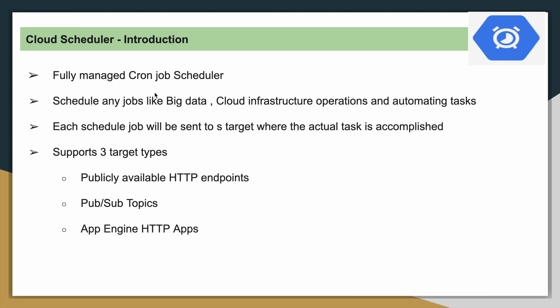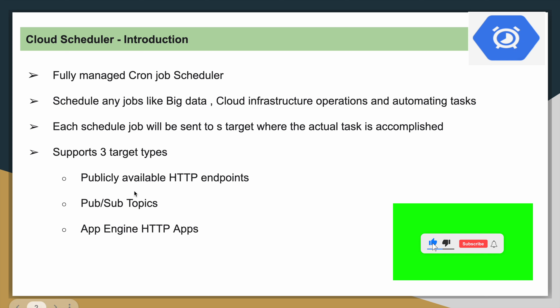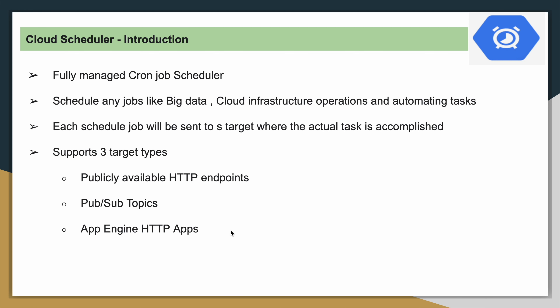Cloud Scheduler works in a slightly different way. The scheduled job is sent to a target, and the target can be anything. Currently it supports three target types: publicly available HTTP endpoints, Pub/Sub topics, and App Engine HTTP applications. The actual task is executed through these endpoints, and we'll see examples for each use case in upcoming videos.